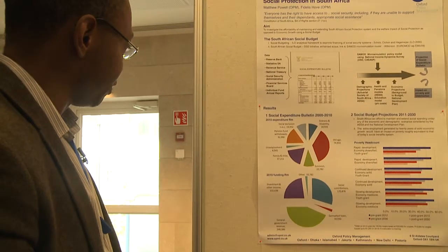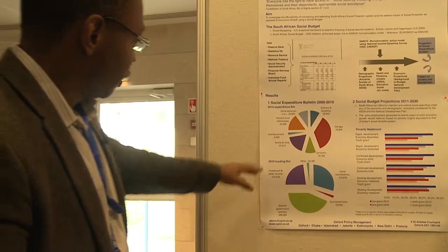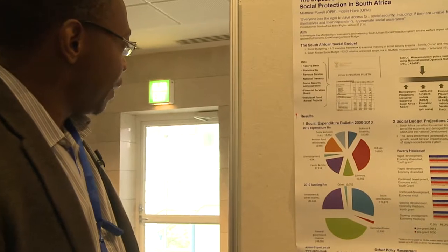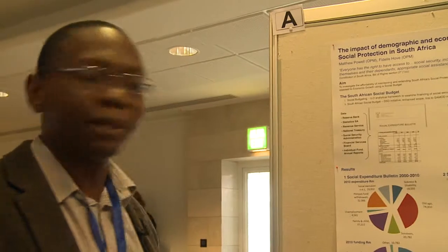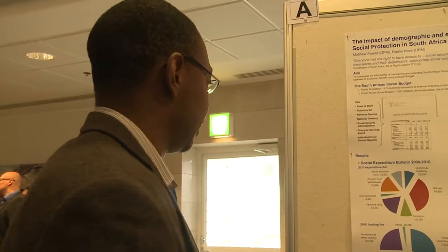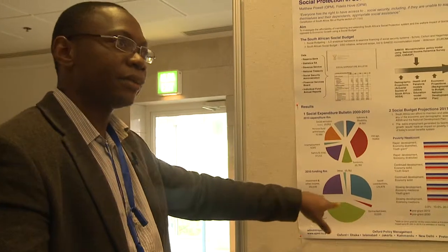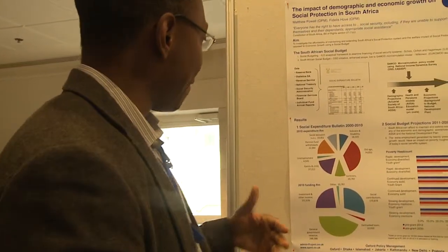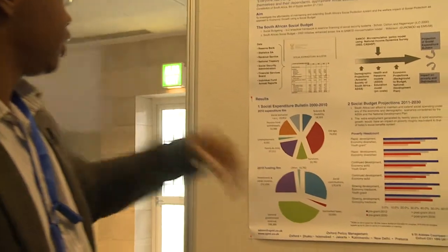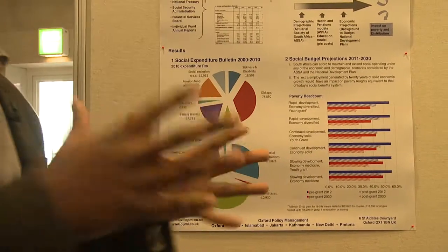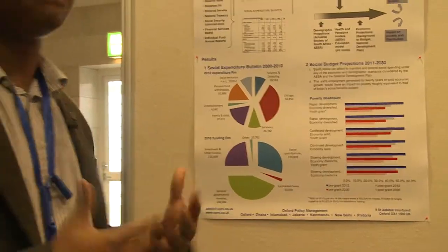Also shown here is the funding side of social expenditure. The biggest component is tax-funded — general government revenue. The second biggest component is social contributions: employee and employer contributions to pension funds. Another interesting feature is the size of investment income going into the system. If you look at the figures, the sum of these funding sources is higher than social spending, meaning there is an accumulation of reserves in the system — primarily private pension reserves.